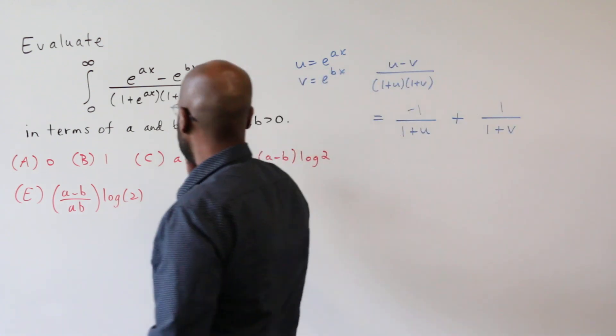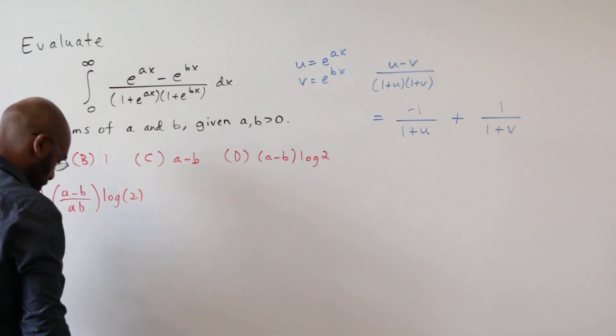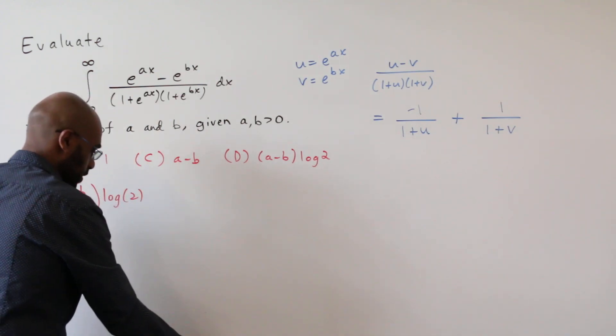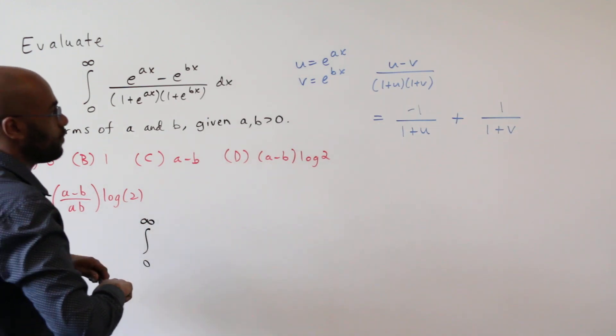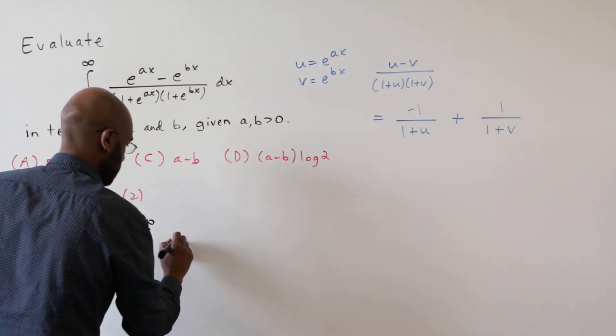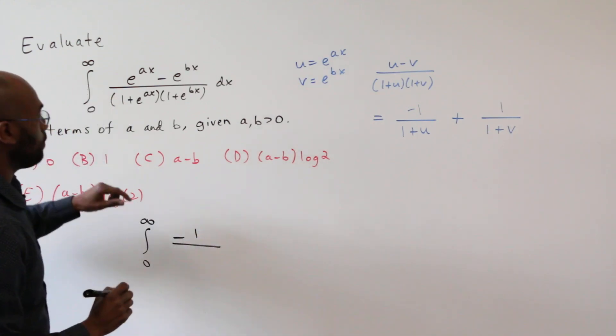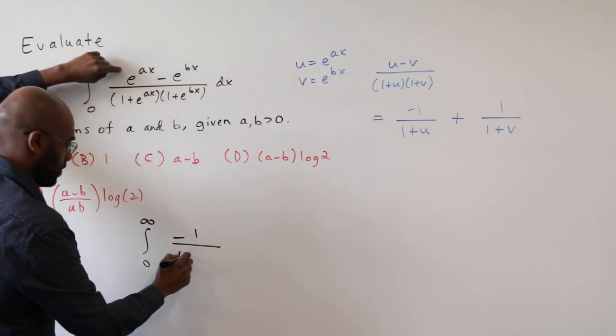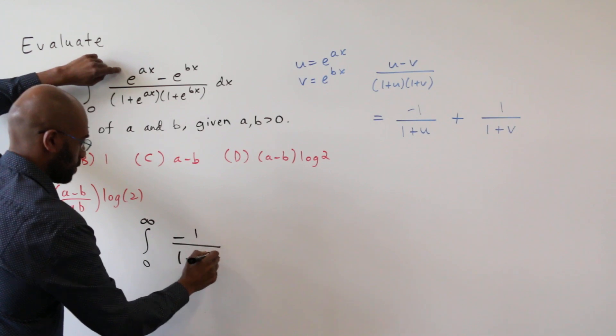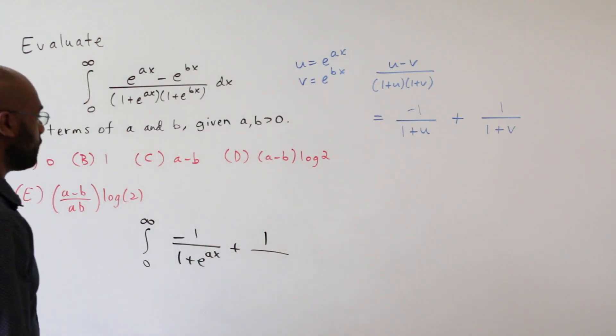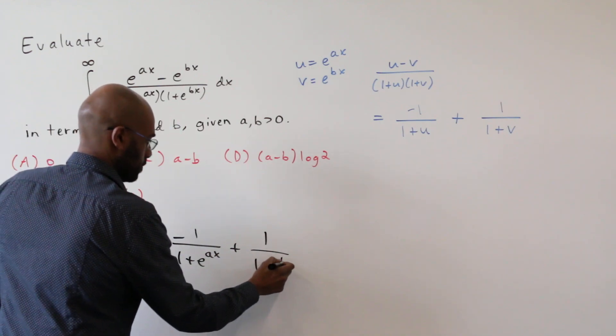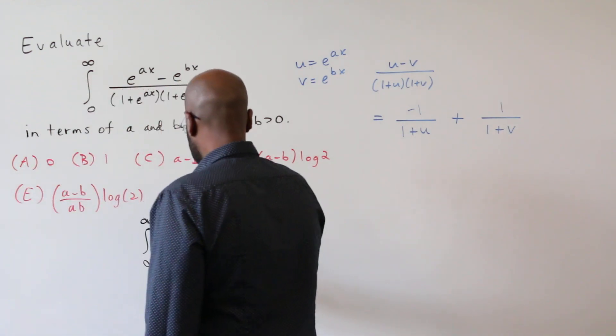And so we can rewrite this integral that we started with as the integral from zero to infinity of negative one over one plus u, u is e to the ax, plus one over one plus v. And this is dx.